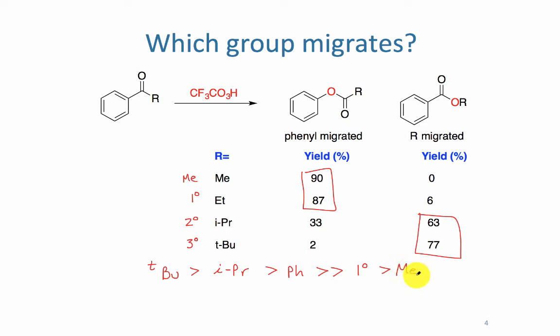Notice that these trends are fairly rough, but in general they go along the same lines as the groups that can best stabilize a carbocation.